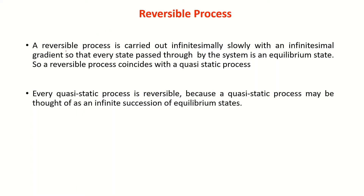A reversible process is carried out infinitesimally slowly with an infinitesimal gradient so that every state passed through by the system is an equilibrium state. A reversible process coincides with a quasi-static process. Every quasi-static process is reversible, because a quasi-static process may be thought of as an infinite succession of thermodynamic equilibrium states.